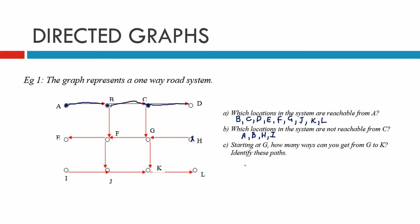There are two ways to get from G to K. We can go from G to K directly — there's an arrow that goes straight along there. Or we can start at G, go to F, from F go to J, and from J go to K. So those are the two ways.